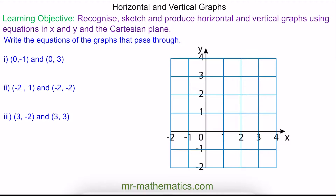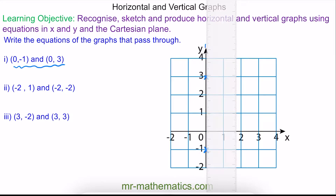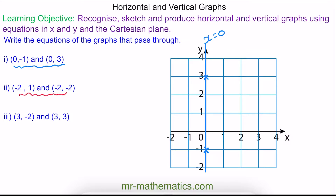Now we're going to find the equations of graphs that pass through two coordinate pairs. For question 1, we have coordinates (0, negative 1) and (0, 3). You can see it's a vertical line along the y-axis, so x is always equal to 0. Do you want to find the equation of the lines for the next two questions? Pause the video and resume when you're ready.